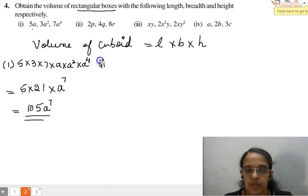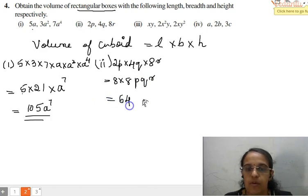Now going to the second part of the question. This is 2P into 4Q into 8R. So when we multiply the numbers together, so it is 8 into 8PQR which is equal to 64PQR which is the volume.